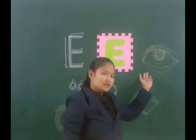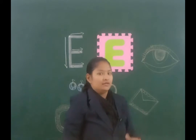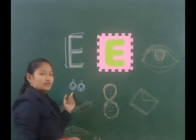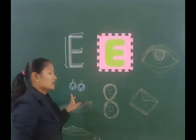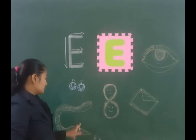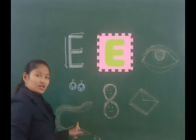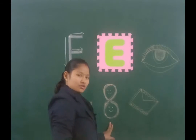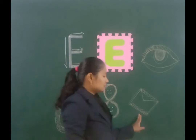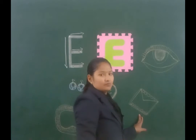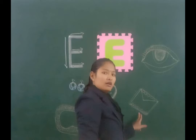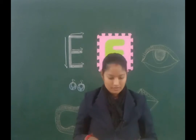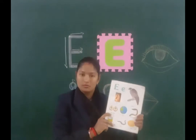You can see — what is this? E for eye. Then this one: earrings. E for earrings. Then this earthworm. That's earthworm. Then eight. E for eight. Then envelope — we post letters in the envelope. Now we will learn some more vocabulary.